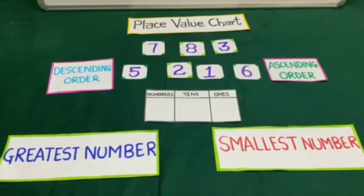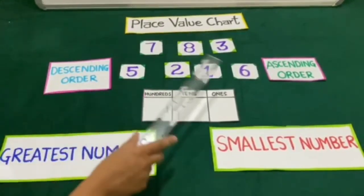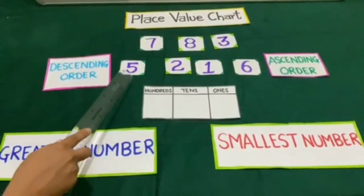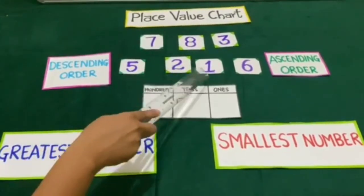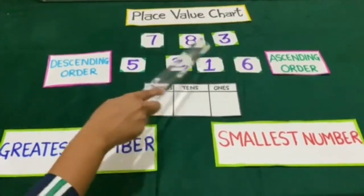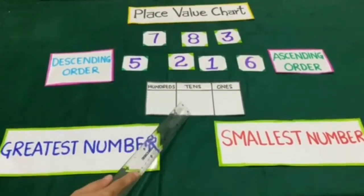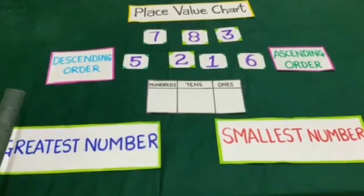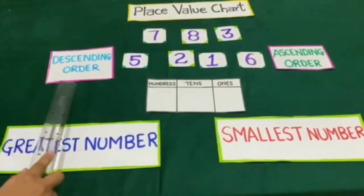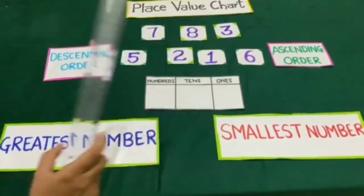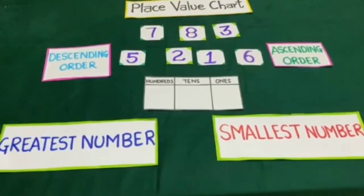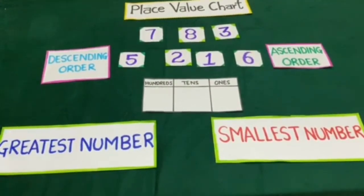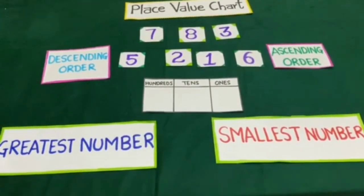Now we have revised all the concepts of numbers. You will make similar digit cards at home, place them in the place value chart, do comparisons, arrange different numbers in ascending and descending order, find the smallest number, greatest number, and do your revision.